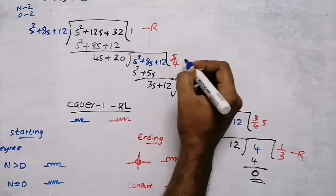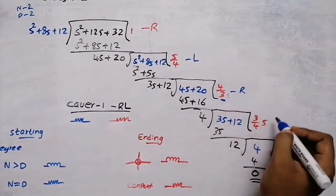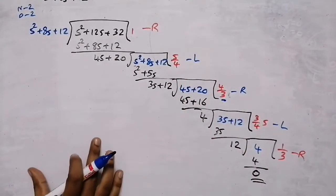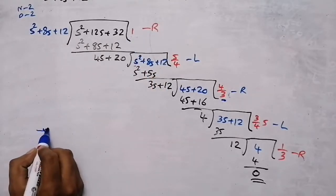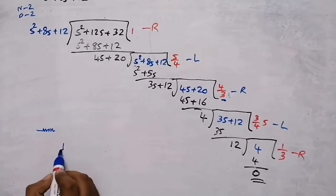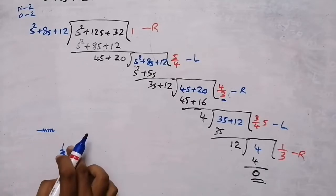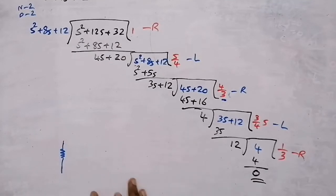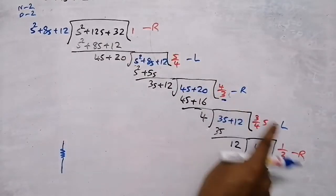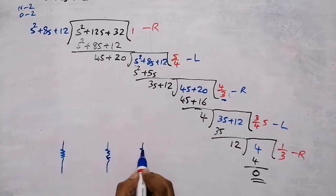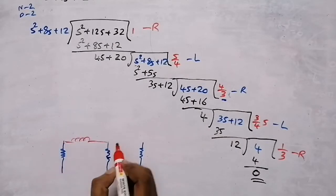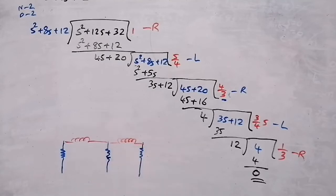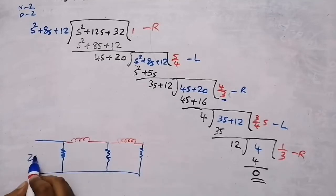In Cauer 1, if starting with a resistor, the elements alternate as: resistor, inductor, resistor, inductor. Since starting with a resistor, we draw it in parallel (shunt). There are three resistors in parallel and two inductors in series. The inductors are placed in series between the shunt resistor branches.